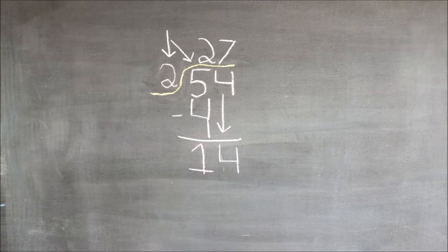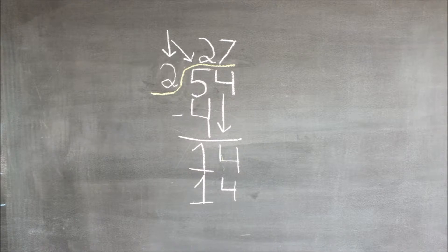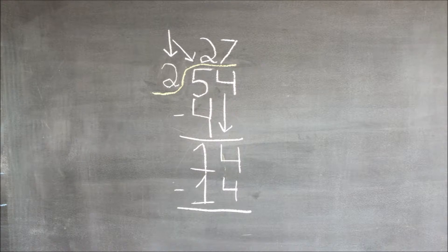Two goes into 14 seven times. Our next step is two times seven, which equals 14, and then we subtract them both, which equals zero.